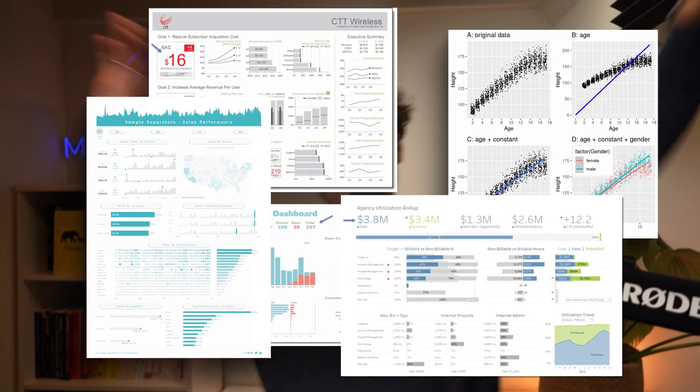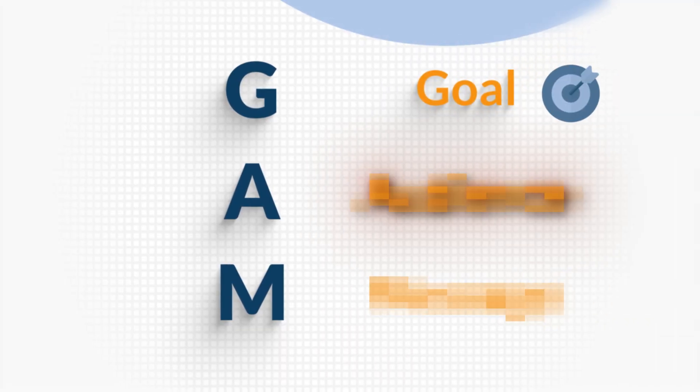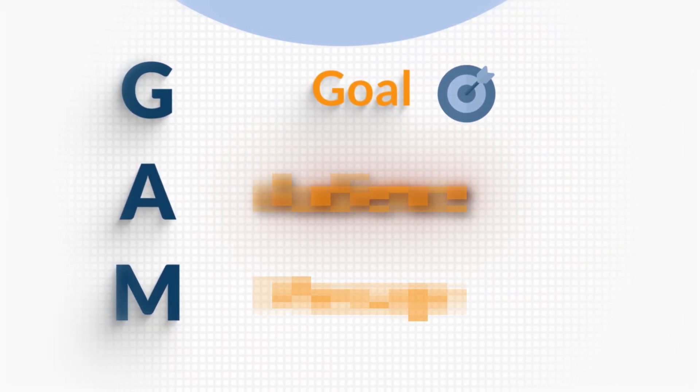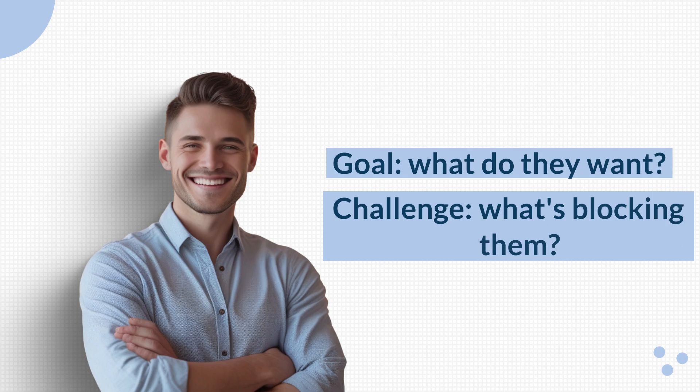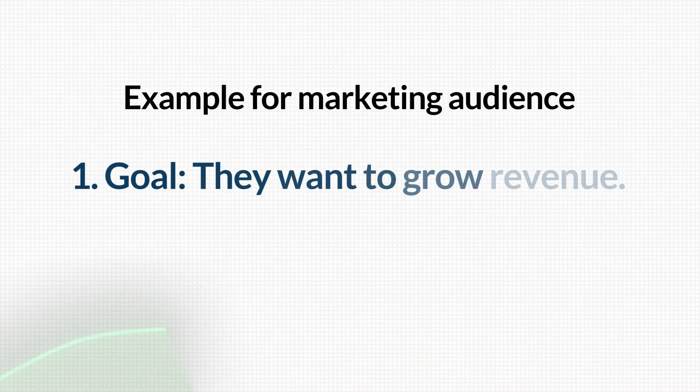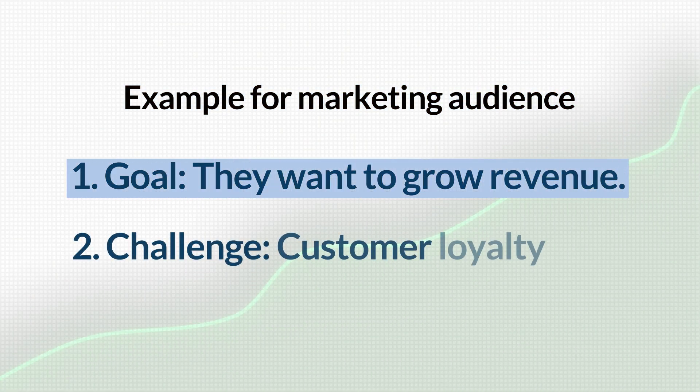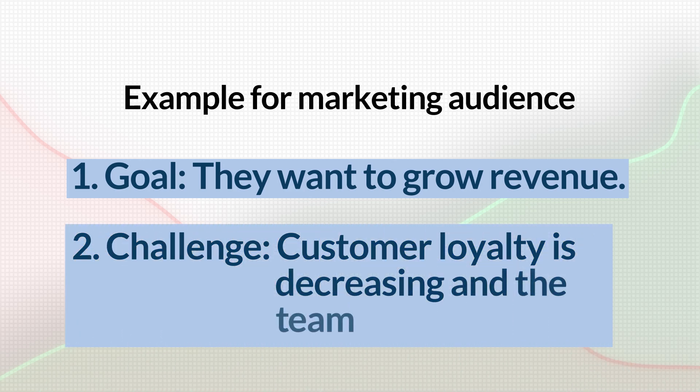Do you see the difference? Now once you know your goal, the next step is knowing who's sitting in front of you. Many data professionals focus on what they find interesting — the data stuff. But it's not about you. It's about the people in the room, the audience. Here's what matters most. First, the goal: what do they want? And second, the challenge: what's blocking them? For a marketing audience, the goal is that they want to grow revenue, but the challenge is that customer loyalty is decreasing and the team doesn't know why. And that's what your story should focus on — not on what you know, but what they need.